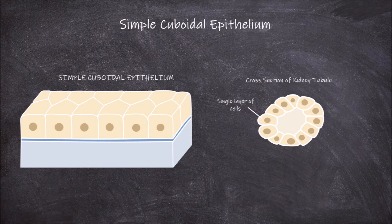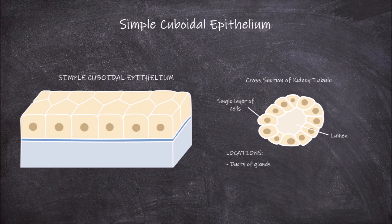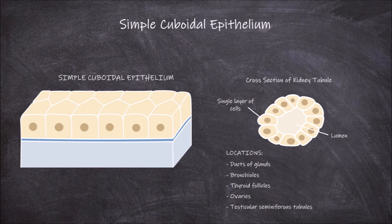Inside the tubule is the lumen. Some more examples of locations where this type of epithelium is found include the ducts of glands such as the mammary glands. It is also found lining the bronchioles, follicles of the thyroid, the outside of the ovary in females, and the inside of the testicular seminiferous tubules in males.